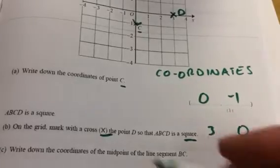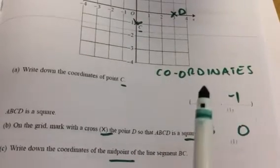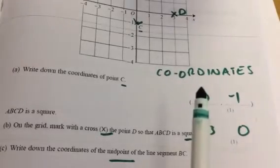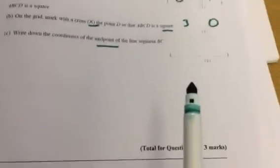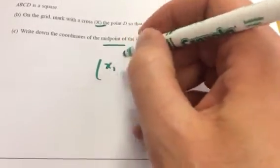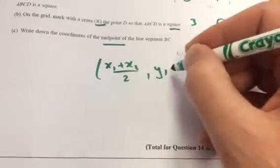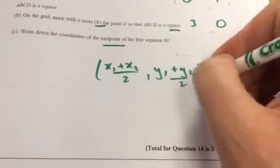Then I have to write down the coordinates of the midpoint of the line segment BC. So to get a midpoint, if I just move this here, using the formula, it's X1 plus X2 over 2, and Y1 plus Y2 over 2.